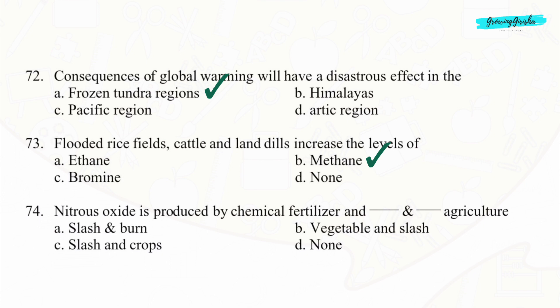Question 74. Nitrous oxide is produced by chemical fertilizer and slash and burn agriculture. Option A: Slash and burn.